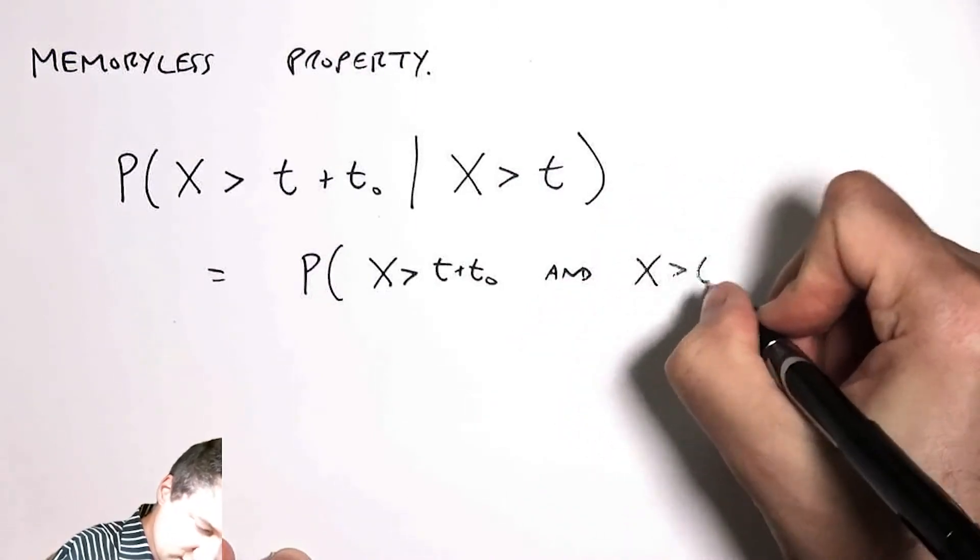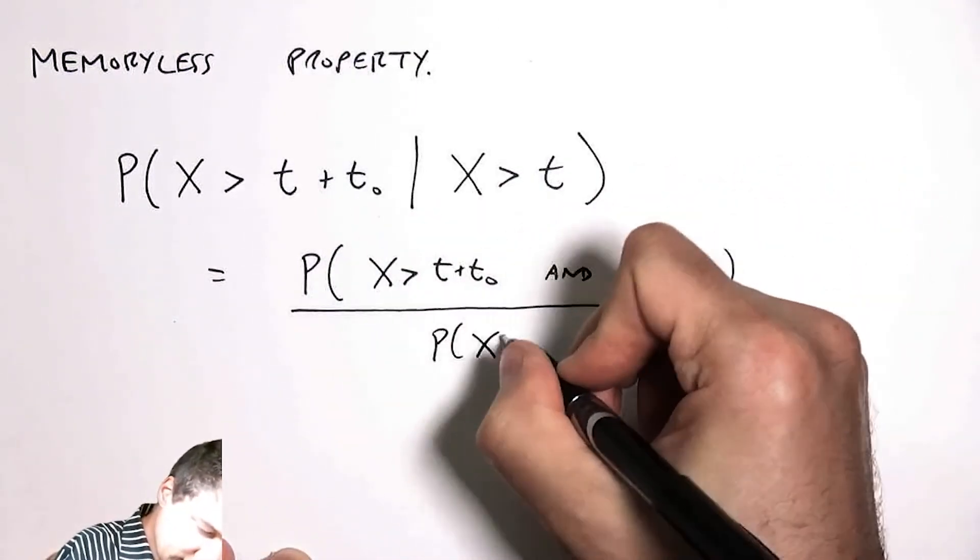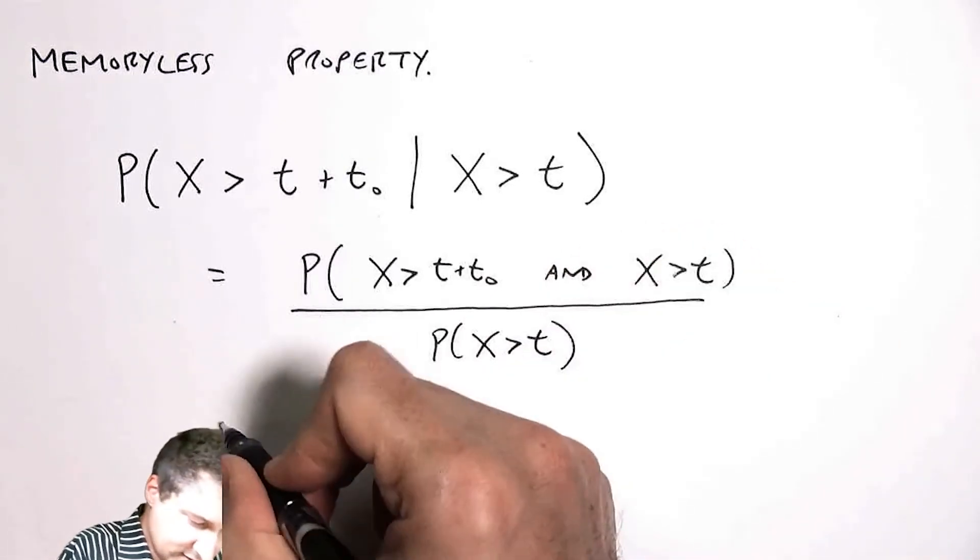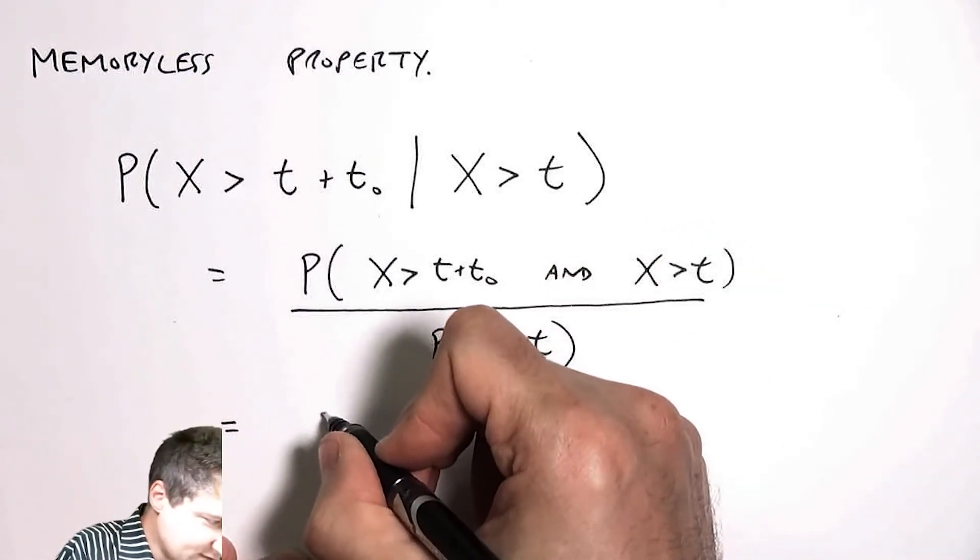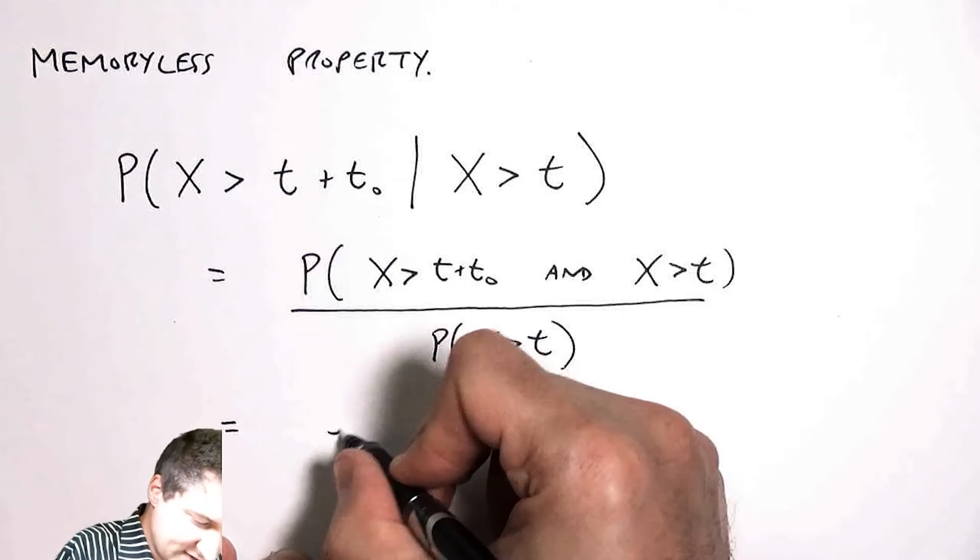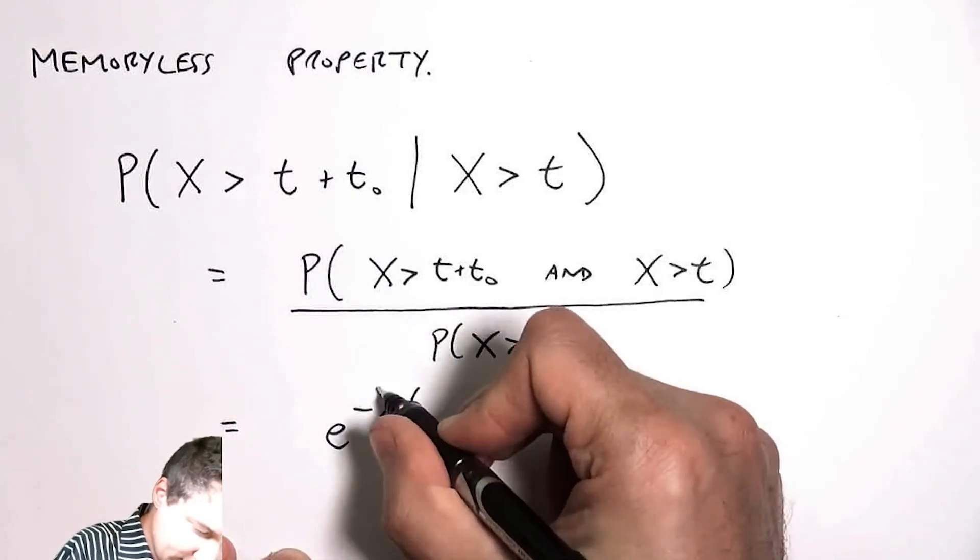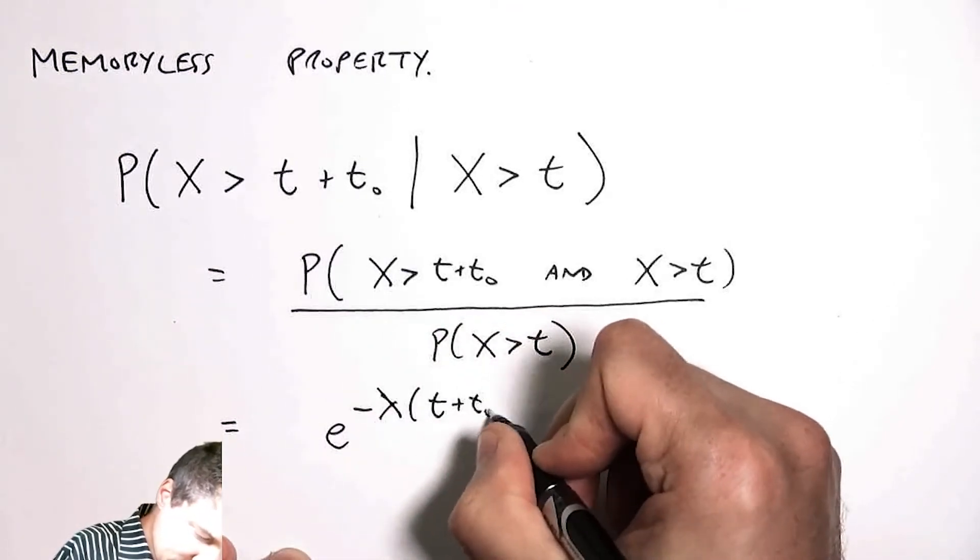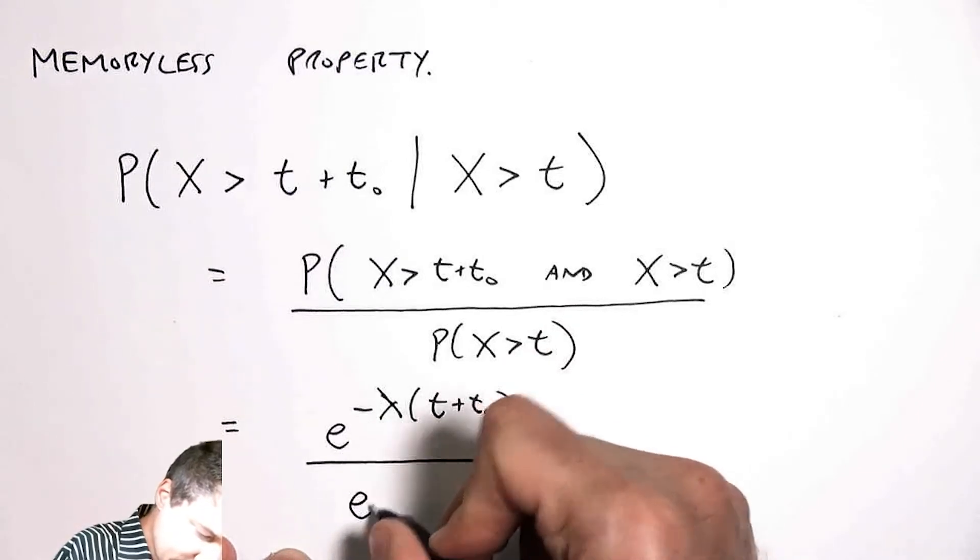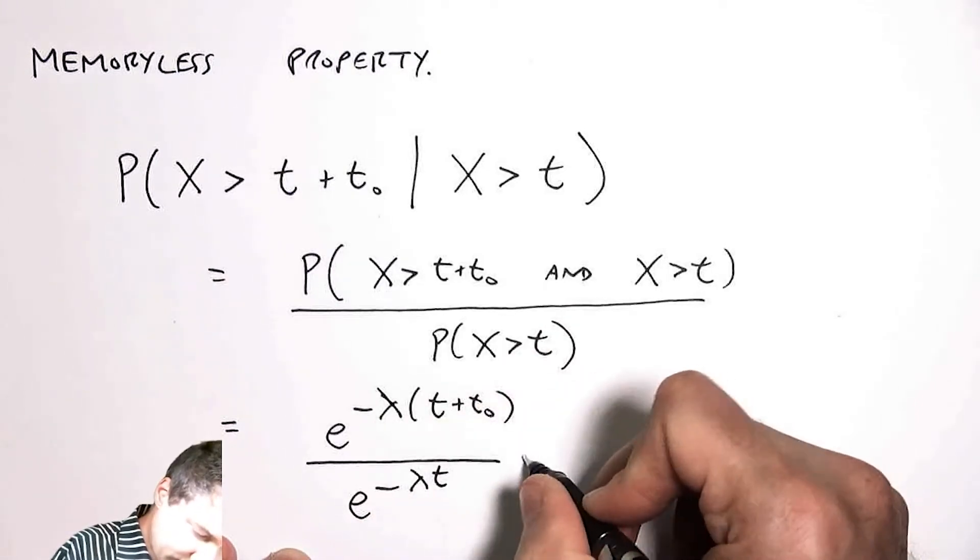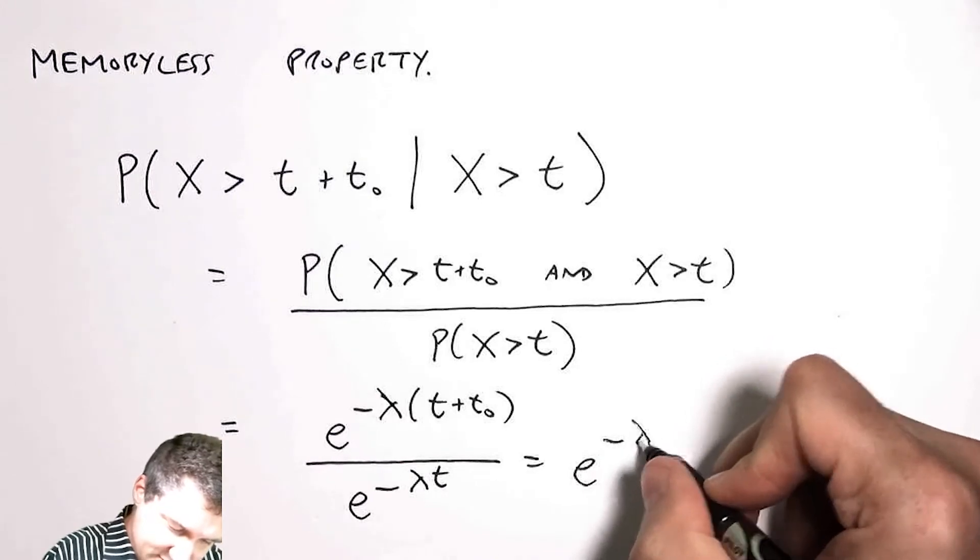It's the probability of both of these events over the probability of this event. The top event is just the probability that x is greater than this value, which is lambda like this. The denominator is this, and I can cancel the stuff out, I get this.